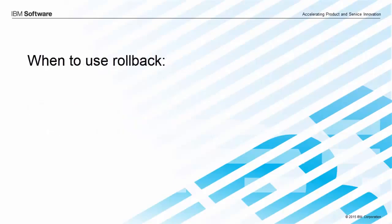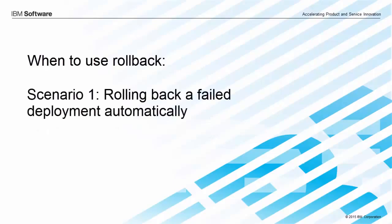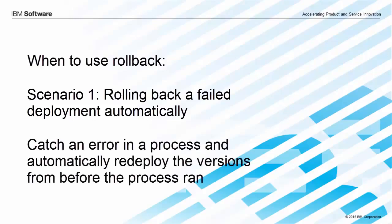You do need rollback in two situations, and I'll cover these both with a demo in this video. Rolling back a failed deployment automatically: suppose you run a deployment and it fails. You can use rollback as an error checking step. The rollback step catches the error and automatically sets the environment back to the versions that were there before the process started. That's useful for preventing downtime, because it all happens automatically.